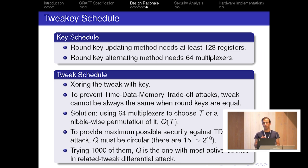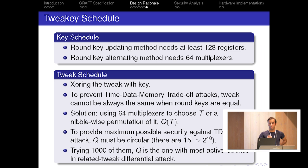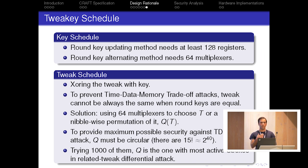What we did is choose around 1,000 of them and evaluate the security each provides. The currently chosen permutation is the one with the most active S-boxes in the related-tweak differential attack model.